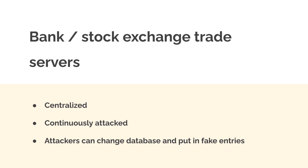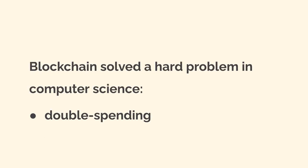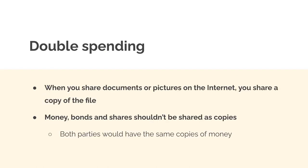With a blockchain you have no middleman, so costs are a lot cheaper — you don't lose credit card fees, for example. The blockchain is open 24/7 and it's also a lot more secure. The blockchain solved a hard problem in computer science known as the double spending problem. When you share a document or picture on the internet, you're actually sharing a copy of the file.